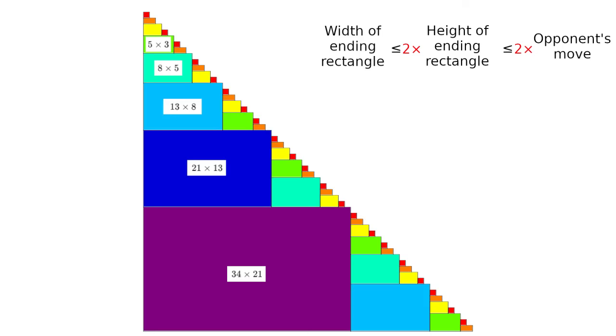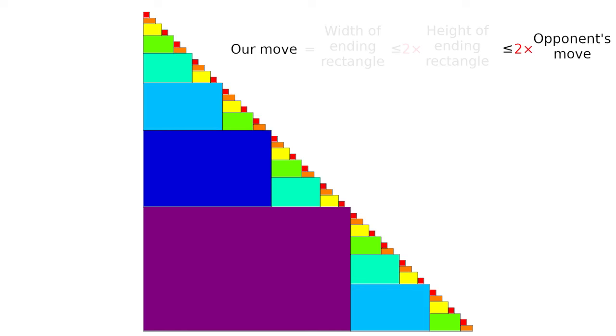The move we'd like to make is to remove that last Zeckendorf term, which is the width of this rectangle. And that's at most twice the height, which is at most twice the opponent's move. So we want to make a move that's at most twice the opponent's previous move. That's always a valid play.